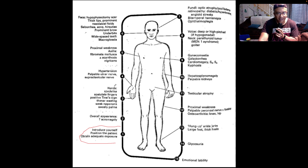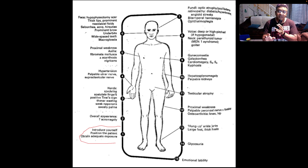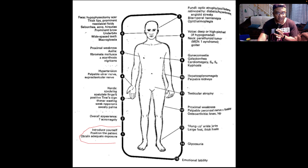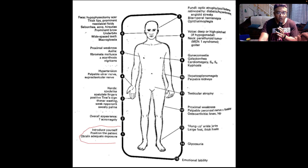You want to look at the hands. Are they spade-like with spatulate fingers? Is there a positive tunnel sign, which indicates that there could be carpal tunnel syndrome? Look for thenar wasting, weak opponents, and very sweaty, fleshy palms.